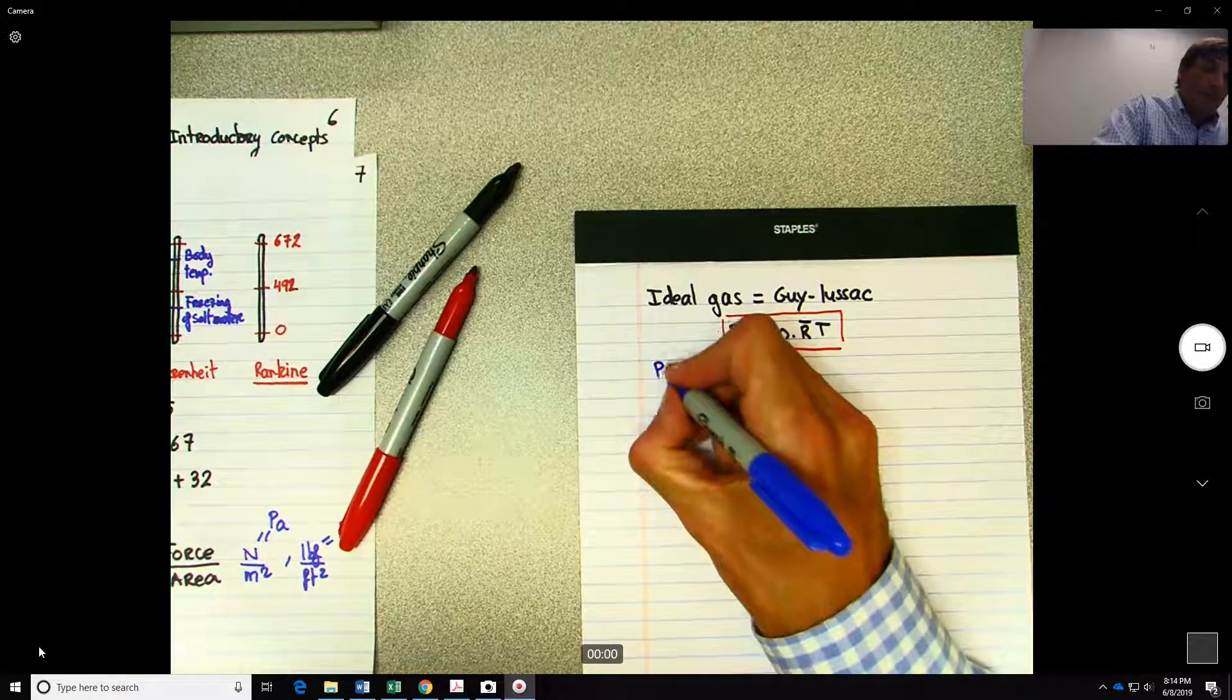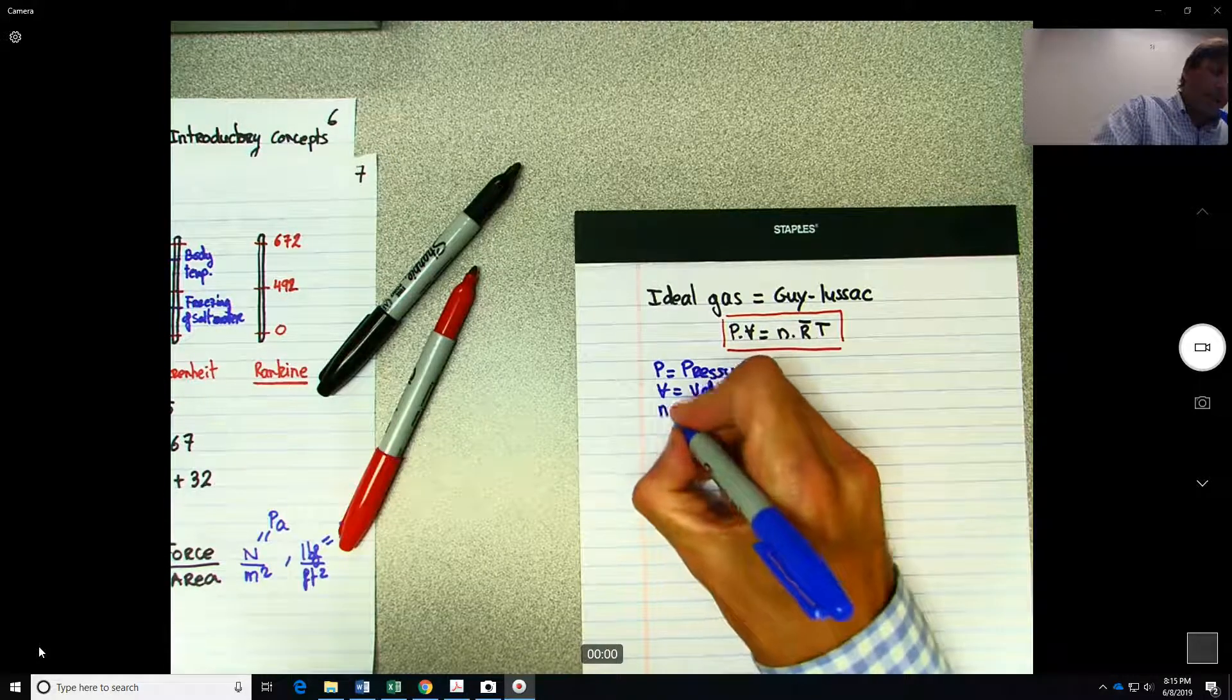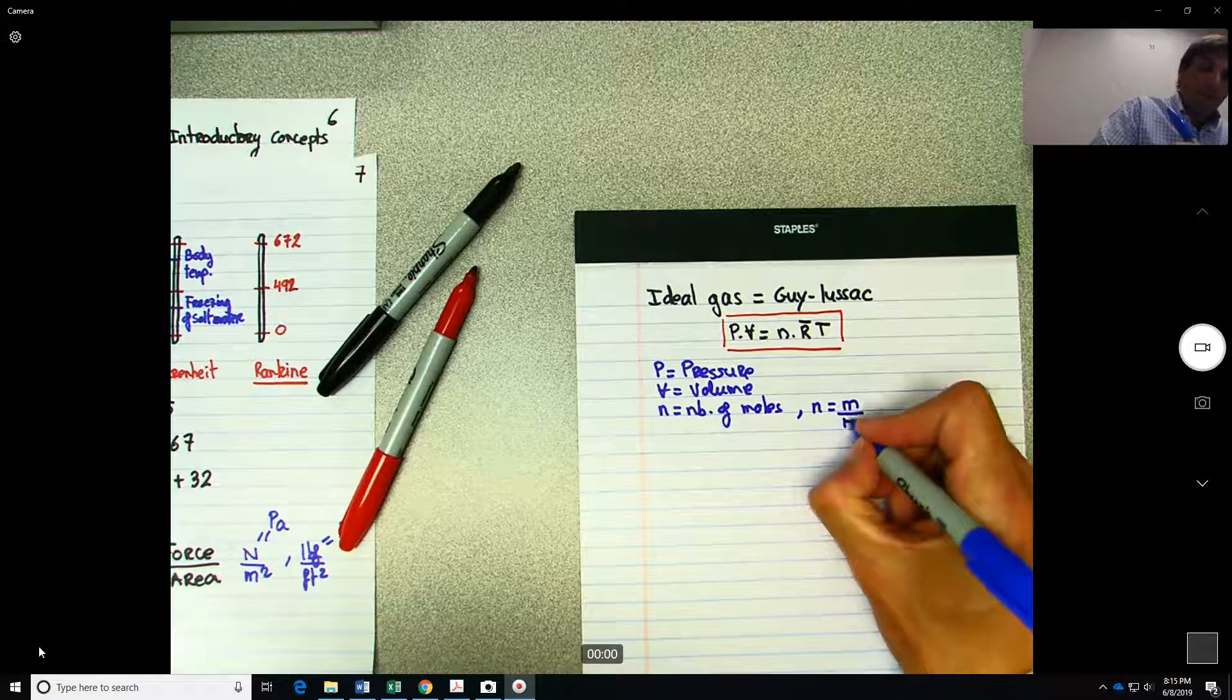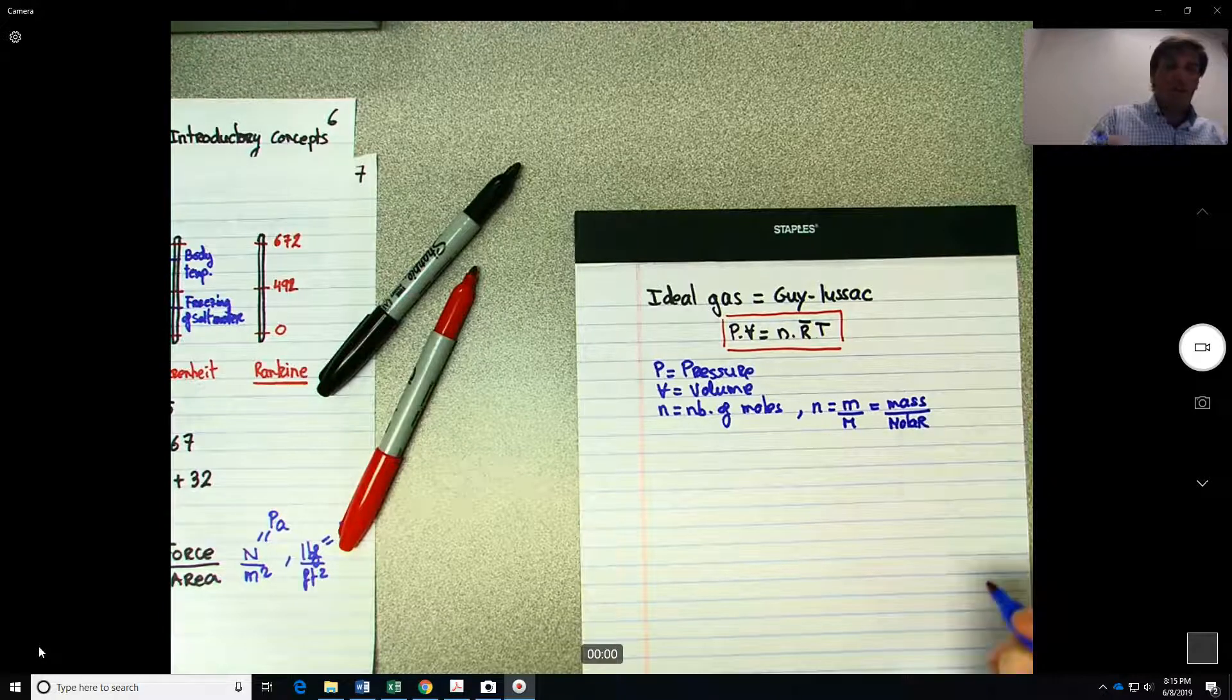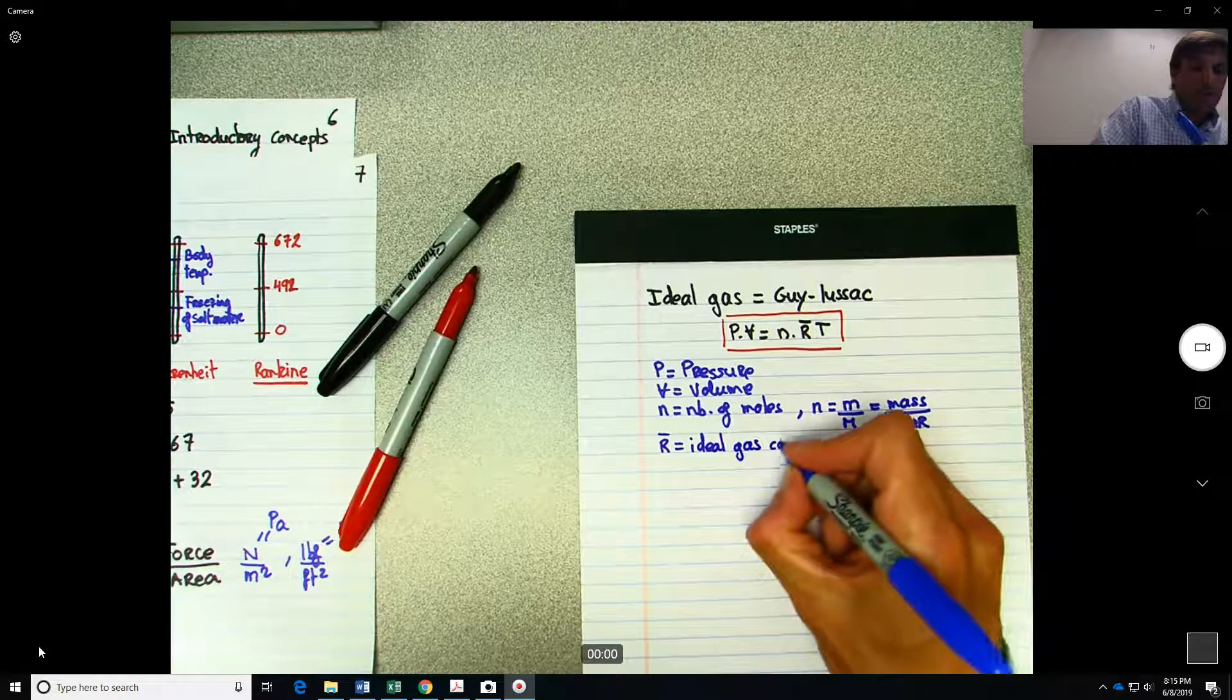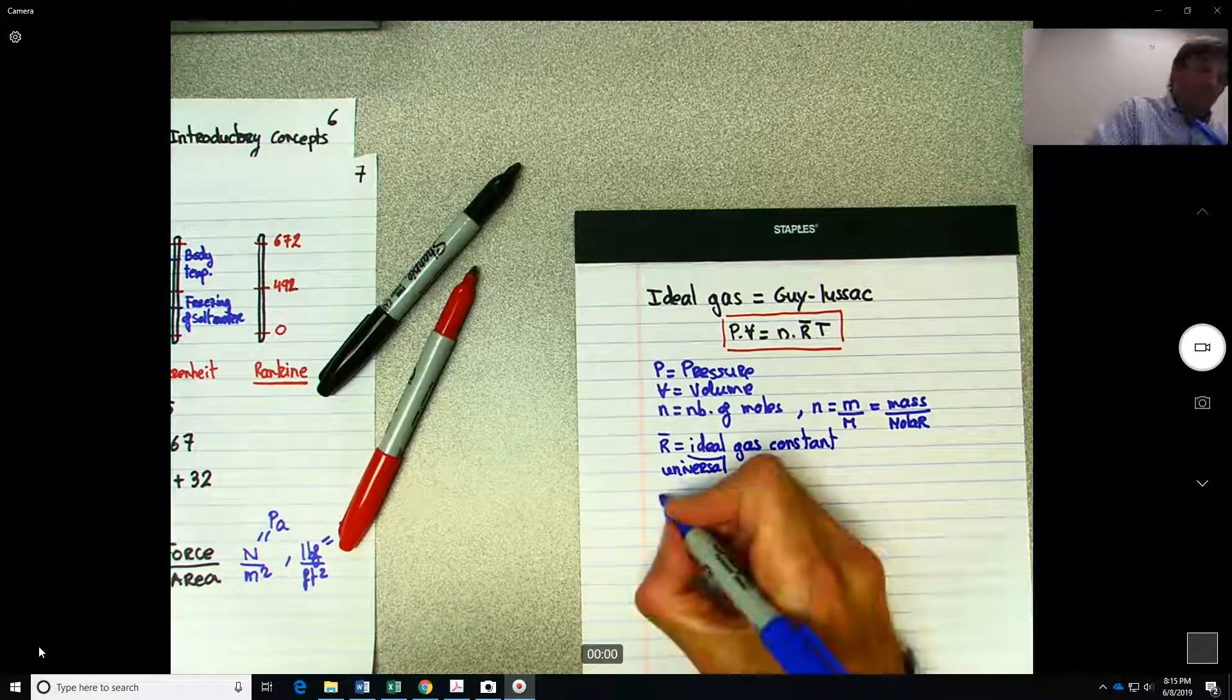But you know it's equal to PV equals NRT. So we're talking about P, where P is the pressure. V is the volume. And N is the number of moles. And that is equal to the mass divided by the molar mass. So mass of the substance divided by the molar mass of the substance. R is the ideal gas constant, the universal gas constant. And T will be the temperature.